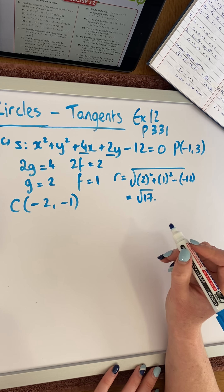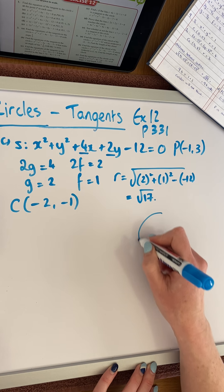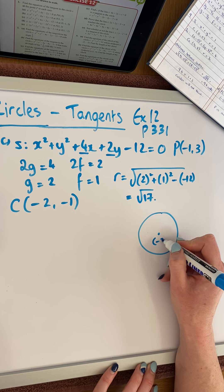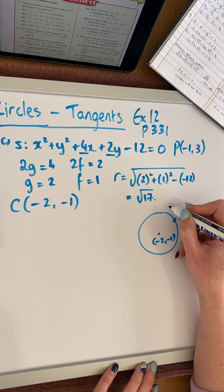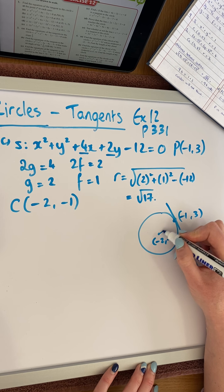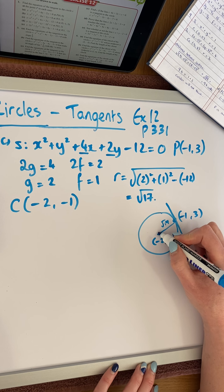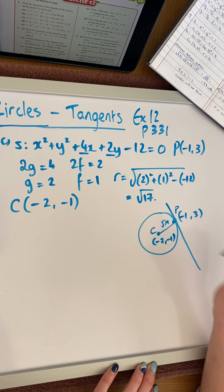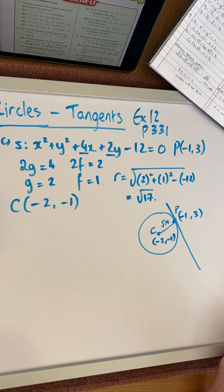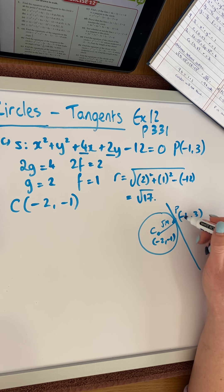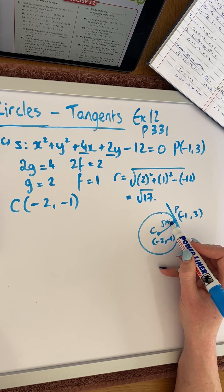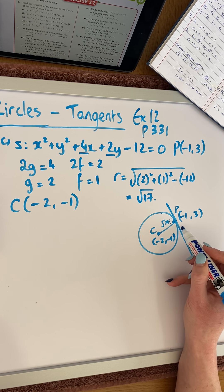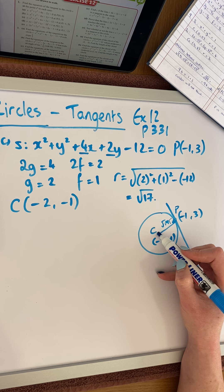It's always useful to draw a quick sketch of what we're looking for. We have a circle with center (−2, −1), and the point of contact is (−1, 3). We're looking for the equation of this tangent, and we know the distance from the center to the point of contact is √17. To find the equation of a line, we need its slope and a point on the line. We already have point P, so we need to find the slope of the tangent.